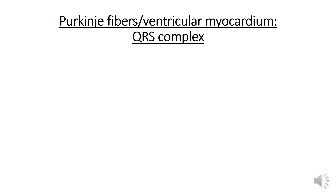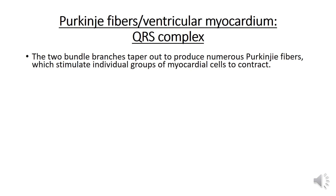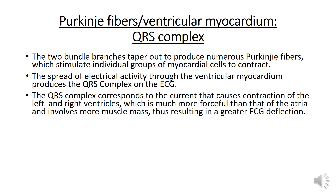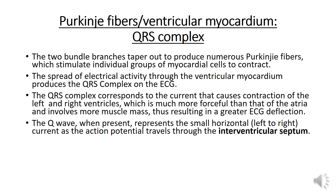Let us discuss about the QRS complex. The origin of the QRS complex is from Purkinje fibers or ventricular myocardium. The two bundle branches tap out to produce numerous Purkinje fibers which stimulate individual groups of myocardial cells to contract. The spread of electrical activity through the ventricular myocardium produces the QRS complex on the ECG. The QRS complex corresponds to the current that causes contraction of the left and right ventricles, which is much more forceful than that of the atria.